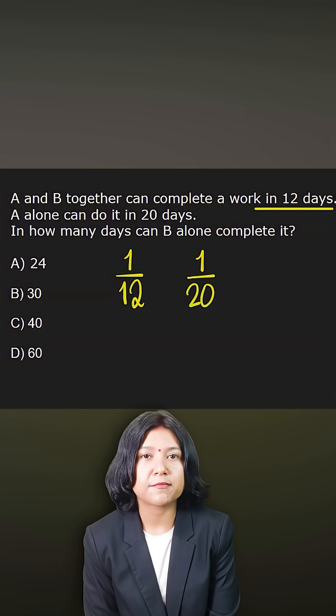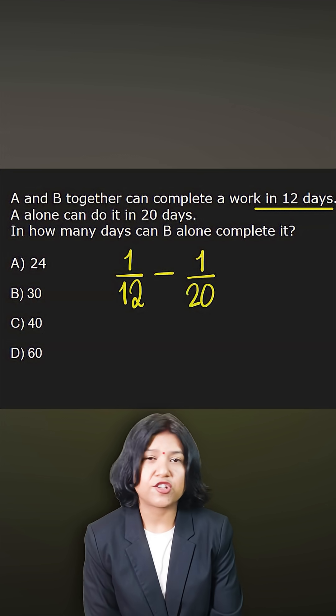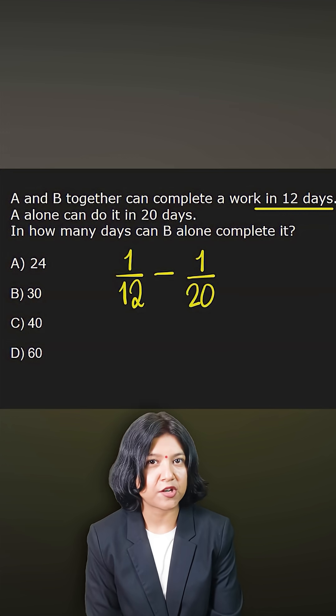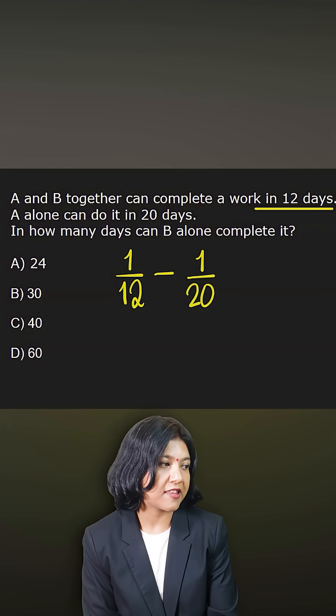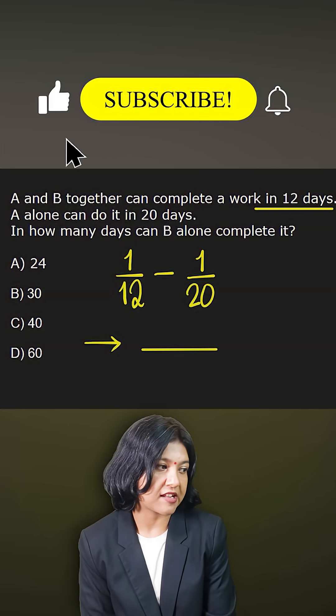So now to find the work done by B alone, you want to subtract, you want to find the difference. The quickest way you can approach questions where you're subtracting the reciprocals is to take their product at the bottom and their difference at the top.